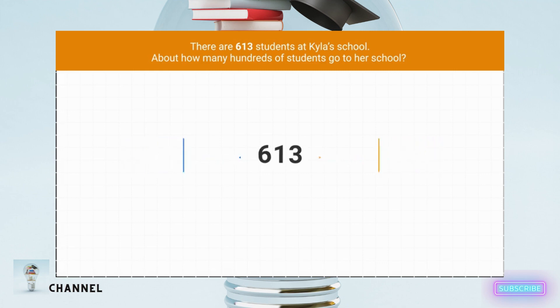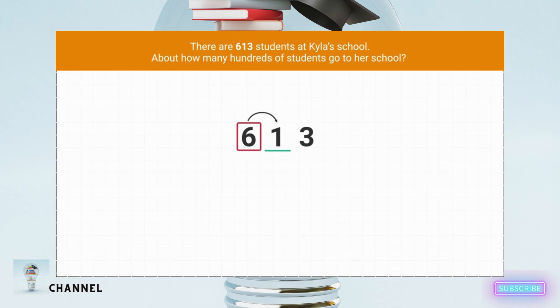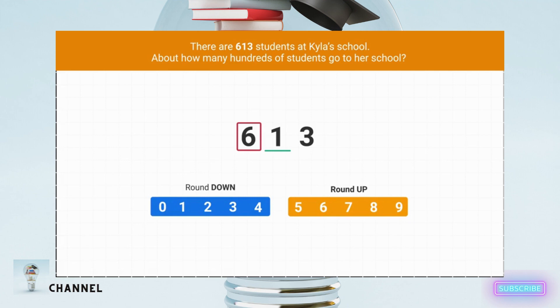Our first step is to circle the hundreds place. What digit should we circle? Six is in the hundreds place, so we'll circle the six. Then we underline the place value to the right — the tens. Next, we look at the underlined digit to decide if we're rounding up or down. Is the underlined digit more or less than five? The underlined digit is one, which is less than five, so we'll round down.